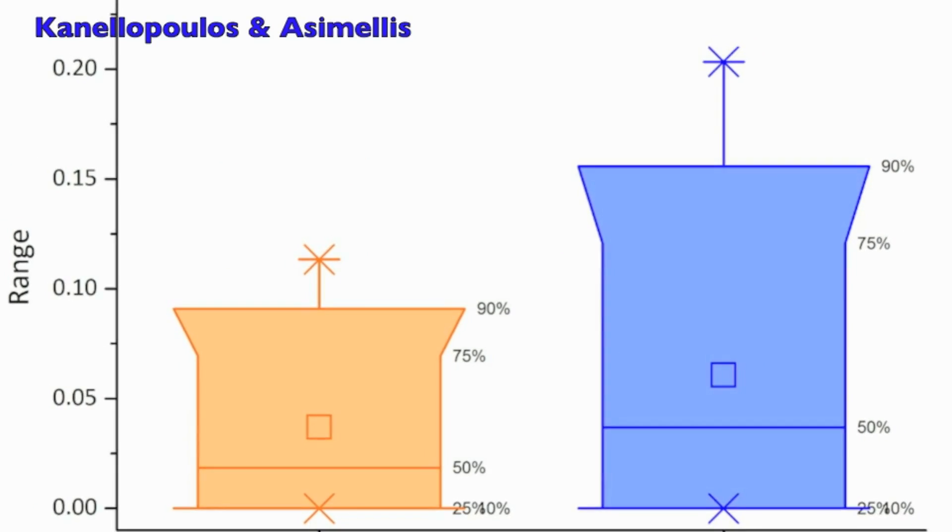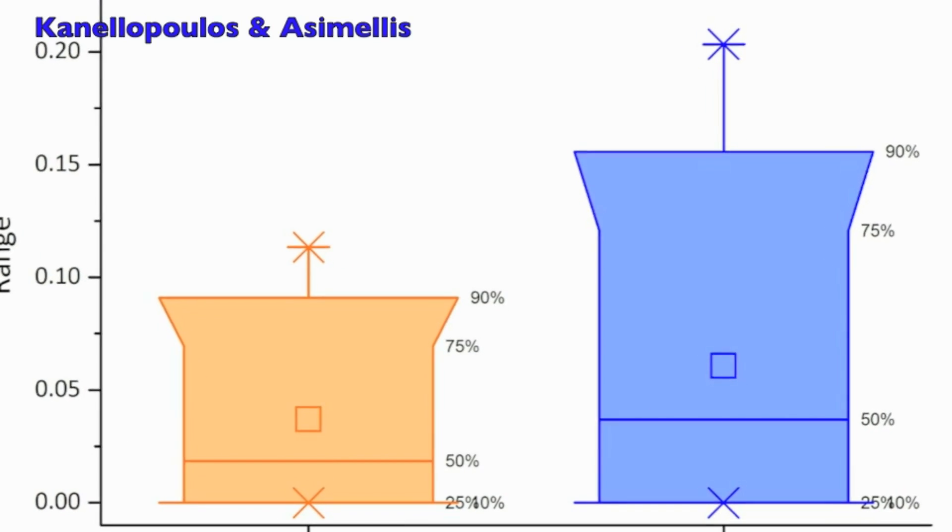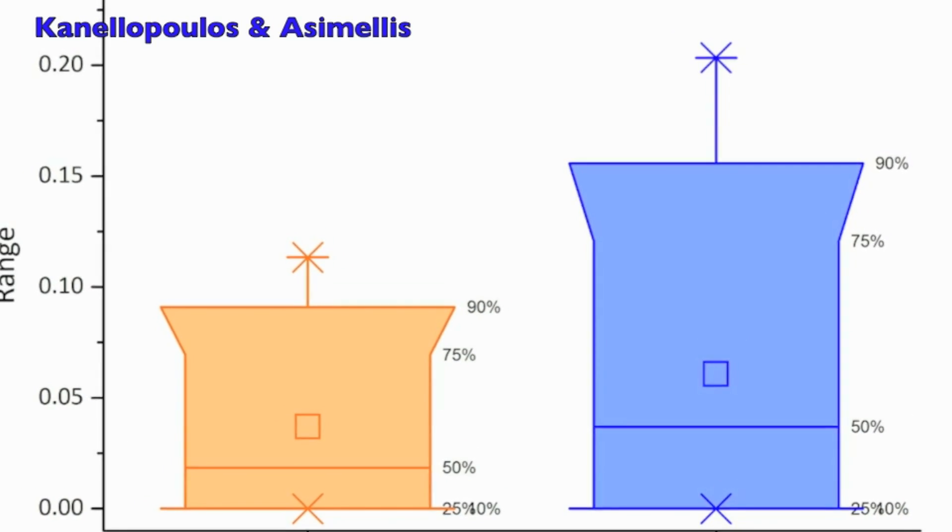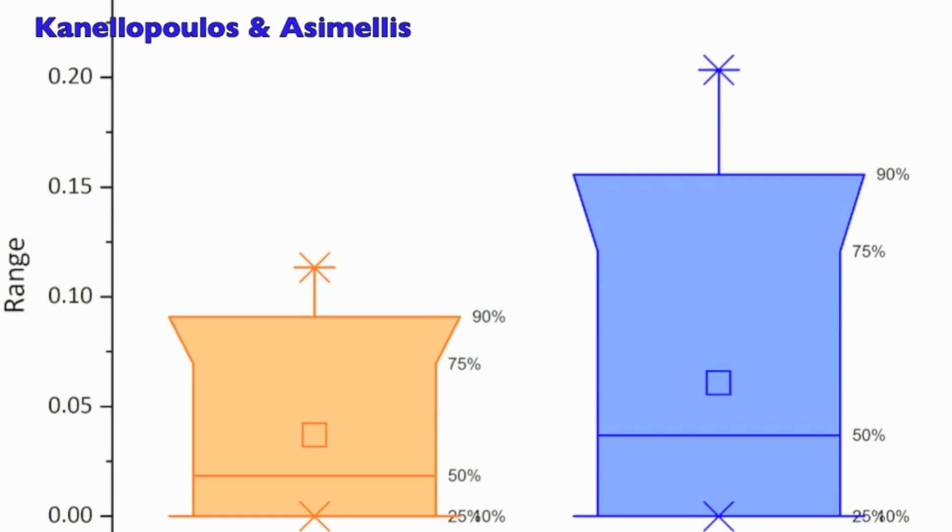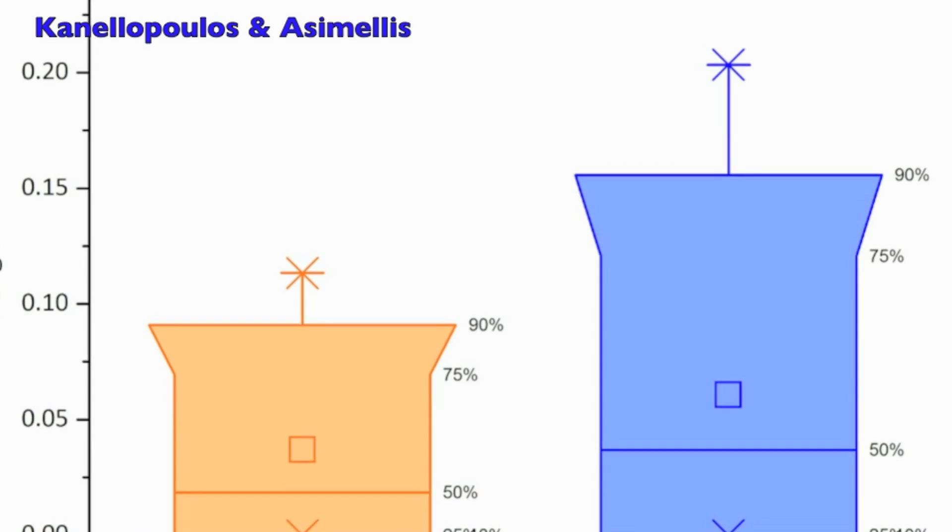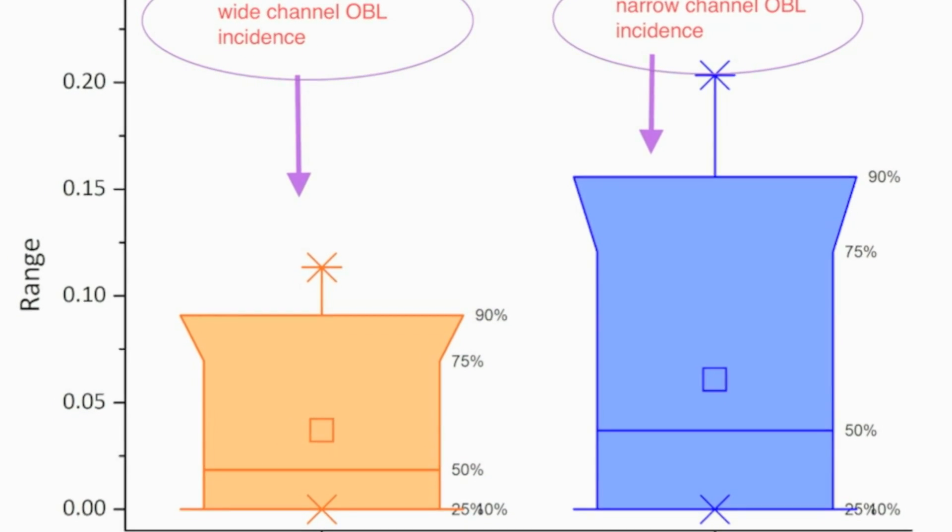I think this is the key picture. We're seeing on the right, blue, the older parameters. On the left, in orange, the newer parameters. There's a dramatic reduction of OBL currents. And this concludes our presentation. We thank you very much for your attention. Thank you.